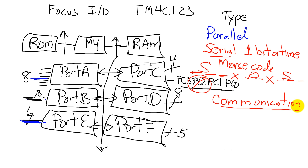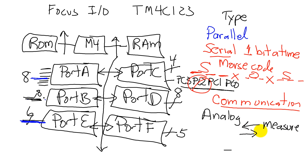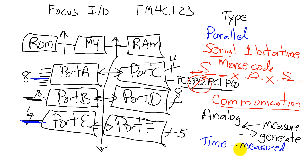We have other types of I/O. We have analog I/O, which can be either an input to measure what goes on in the external world, or it could be an output to generate signals like sound or motion. The third very important type of I/O is time. Time can be measured as an input, and time can also be produced as an output to generate pulses and signals.